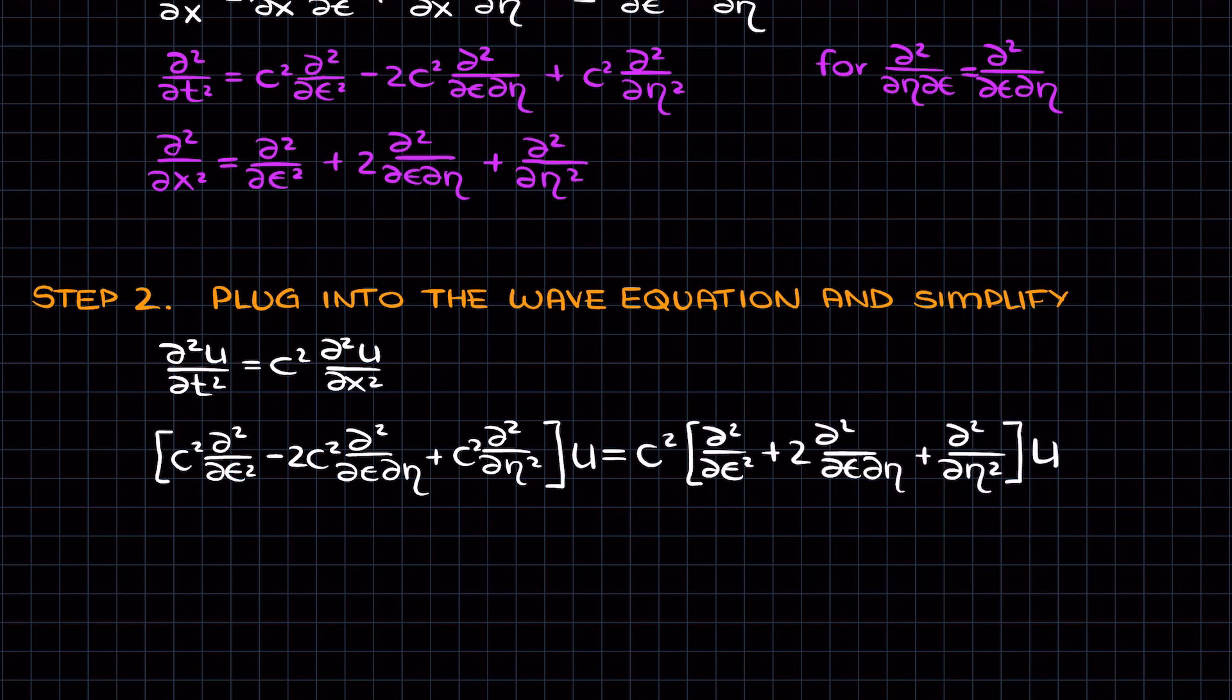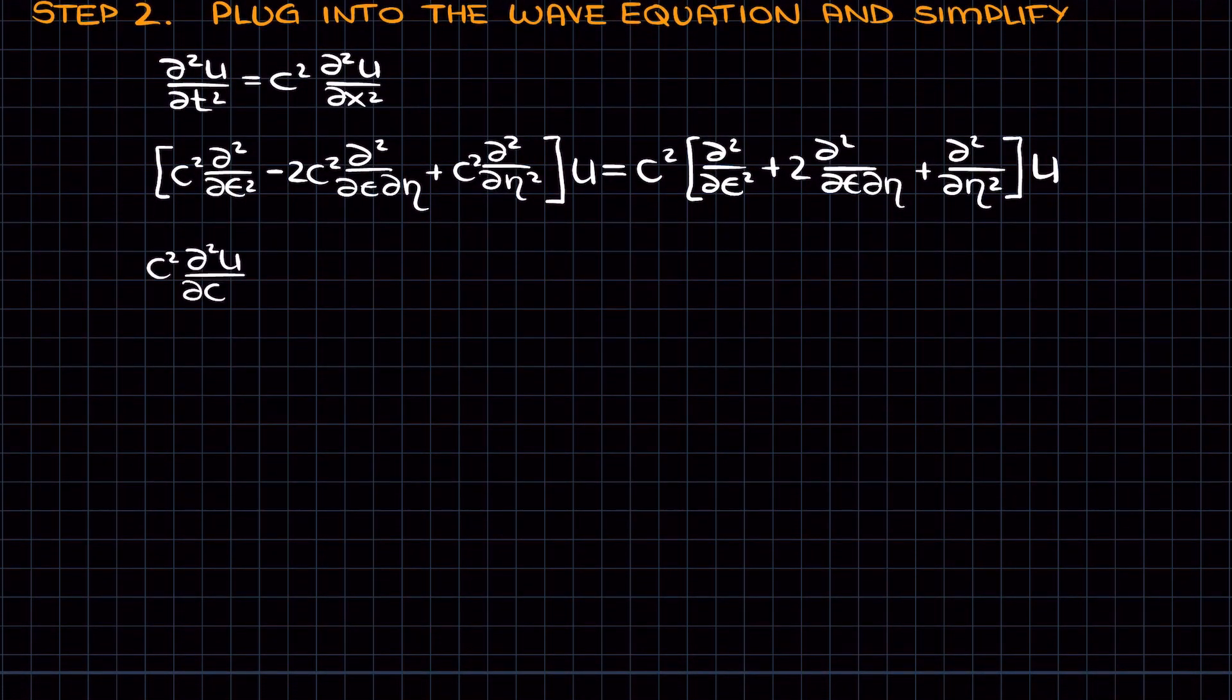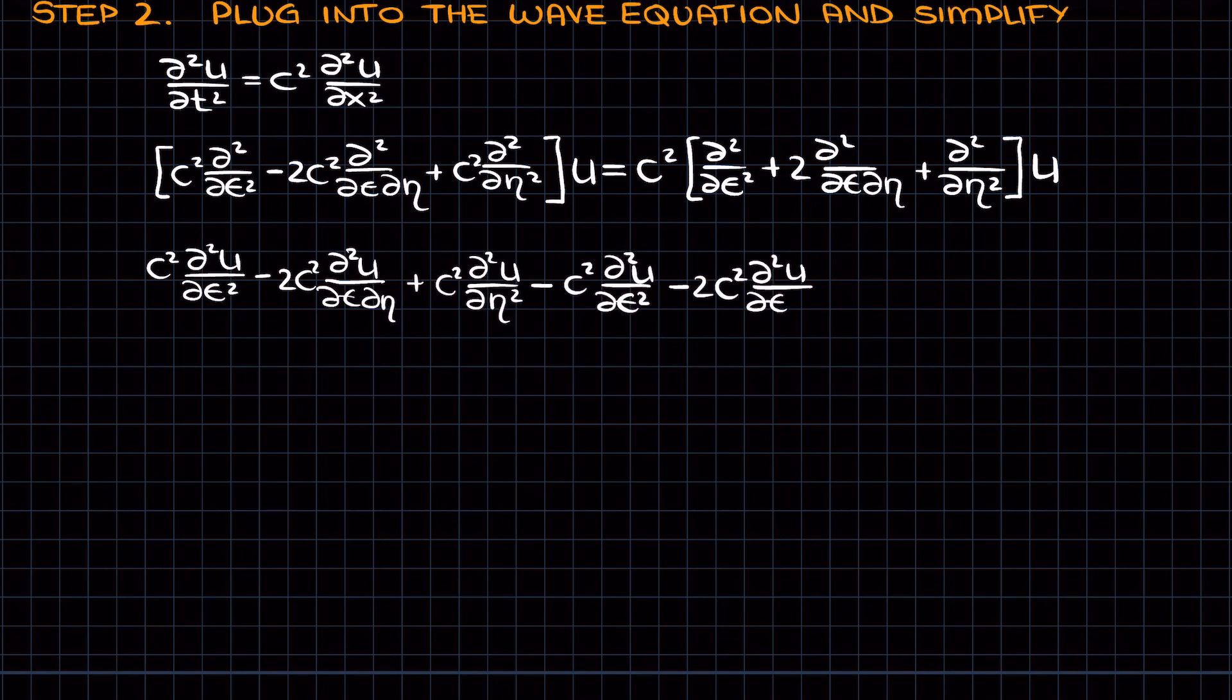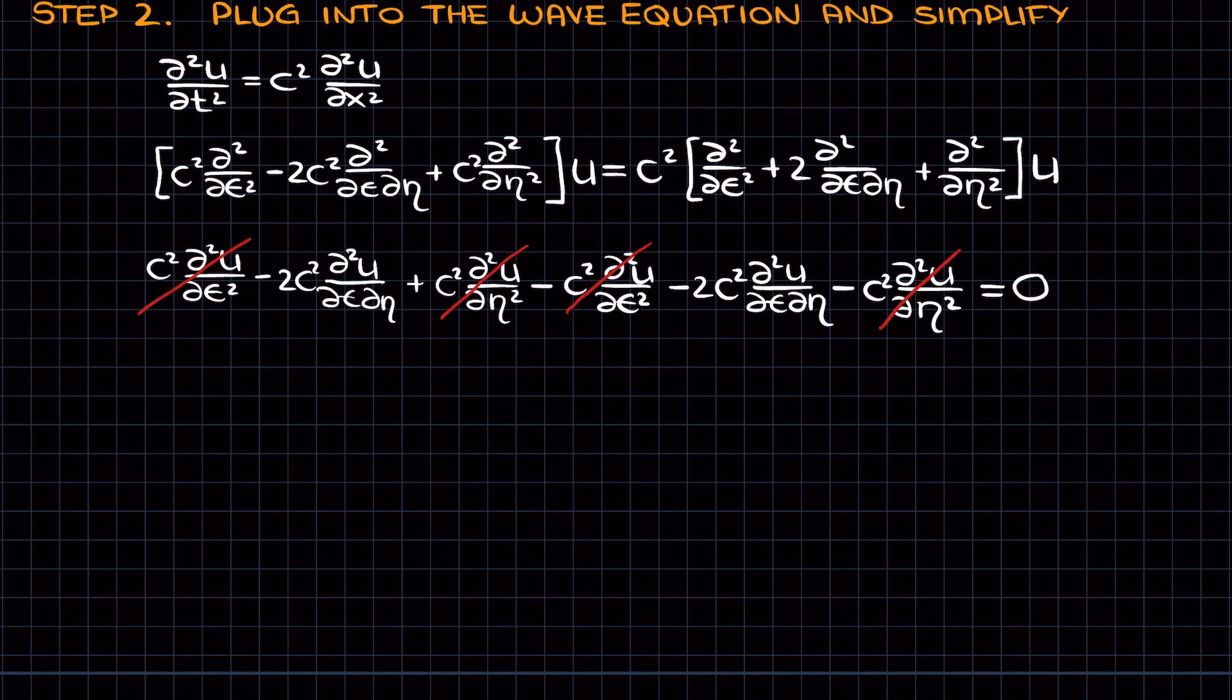On both sides of the equation, we have operators that want to act on u. Let's rewrite this so that they are, and put all terms on the left-hand side so the right-hand side equals 0. Now we can cancel terms and rewrite this as -4c² d²u/d epsilon d eta = 0, which if you divide by -4c², we simply get d²u/d epsilon d eta = 0.